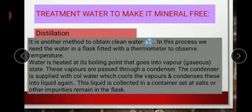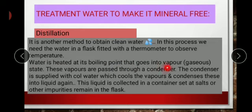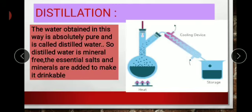To make water mineral-free is a separate matter. The water contains soluble salts and minerals, and we remove these through distillation. We use a flask, a thermometer, and a condenser. The water is boiled and evaporates into water vapors in gaseous form. These vapors are passed through a condenser where cold water causes them to condense back into liquid, which is then collected in a container.